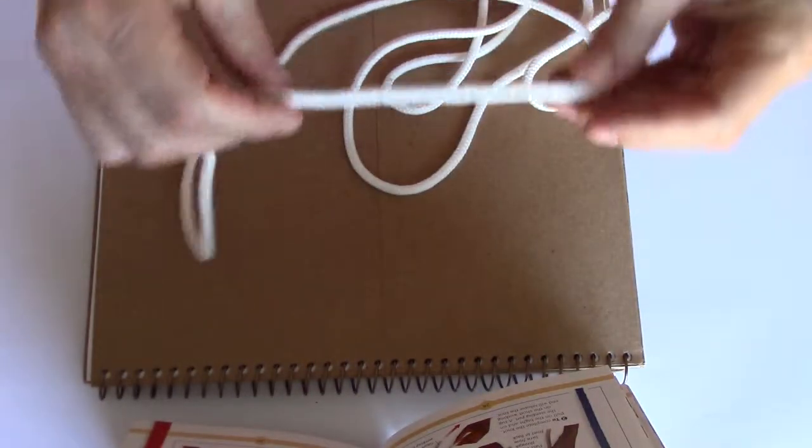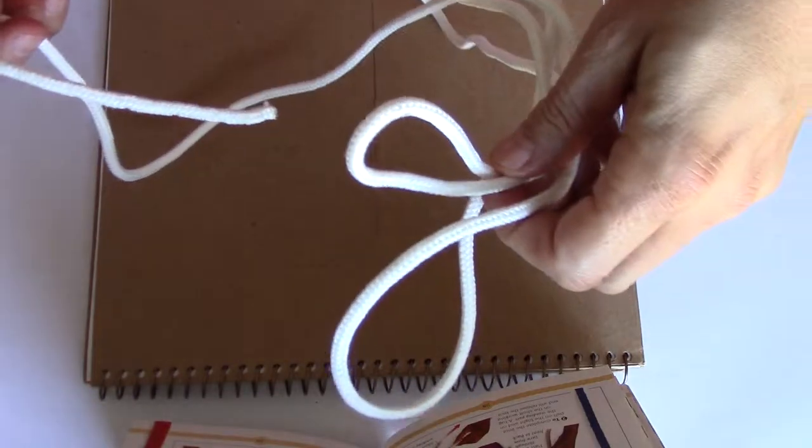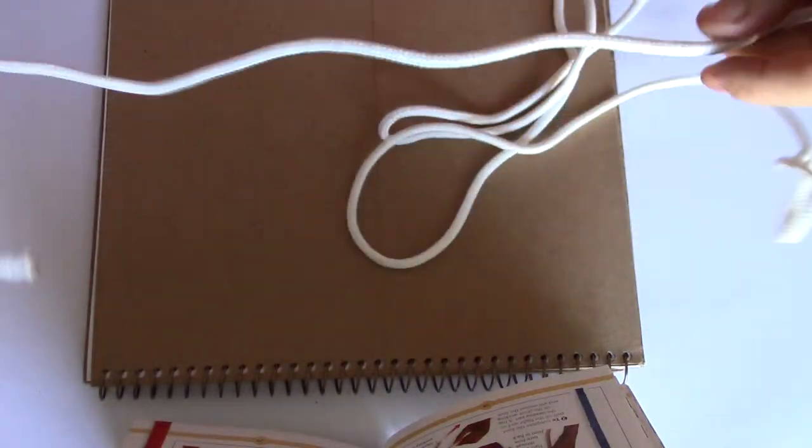We're going to start with the basic overhand knot. We've got two ends of the rope. One is the working end, which is the shorter end, and the other, which is the rest of it, is the long end.